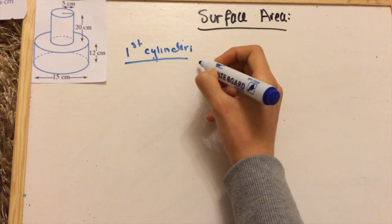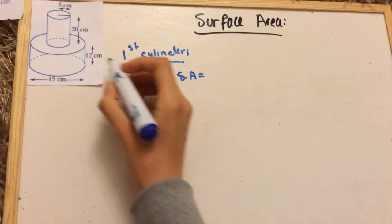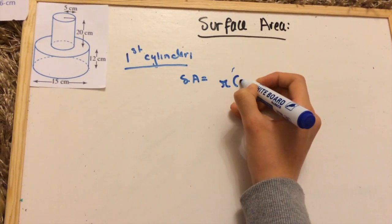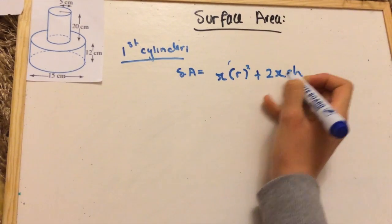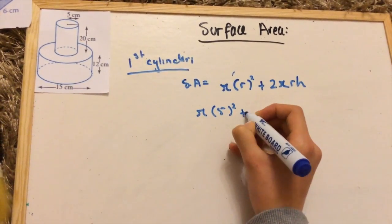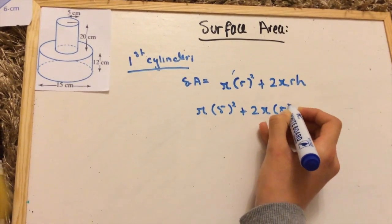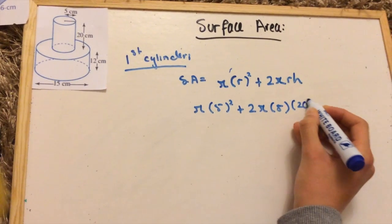The radius is 5 here, but first we're going to write down our formula, πr² + 2πrh, and that is to find the body. Now we're going to substitute. The radius is 5, and the height is 20 centimeters.